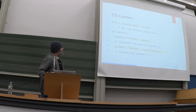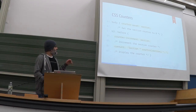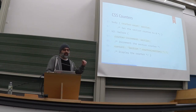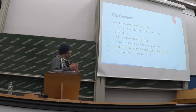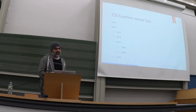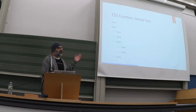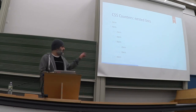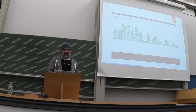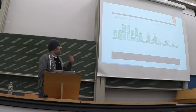CSS counters: you can define a counter — in this case it's called 'section.' You need somewhere to reset the counter, and then every time there's an H3 the section counter gets incremented by one. Then you add content displaying 'section' plus the actual number, giving you section 1, section 2, section 3. You can nest this for more complex numbering. This is quite useful because if someone adds anything within the list, the numbers are always correct. The ribbon in the upper right of this presentation is also done with CSS counters.